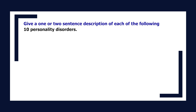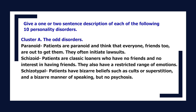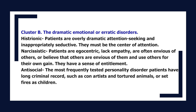Give a description of each of the ten personality disorders. Cluster A — the odd disorders: Paranoid: patients are paranoid and think that everyone, even friends, is out to get them; they often initiate lawsuits. Schizoid: classic loners with no friends and no interest in having friends; also have a restricted range of emotions. Schizotypal: bizarre beliefs such as cults or superstition and a bizarre manner of speaking, but no psychosis. Cluster B — the dramatic, emotional, or erratic disorders: Histrionic: overly dramatic, attention-seeking, and inappropriately seductive; must be the center of attention. Narcissistic: egocentric, lack empathy, often envious of others or believe others envy them, use others for their own gain, and have a sense of entitlement.